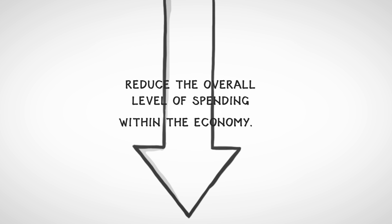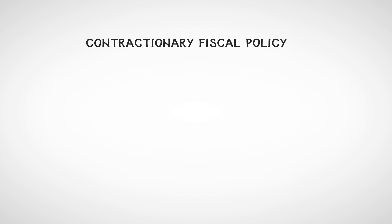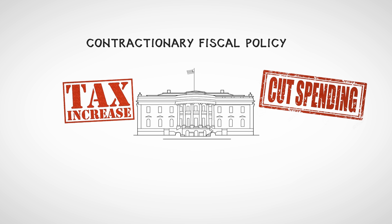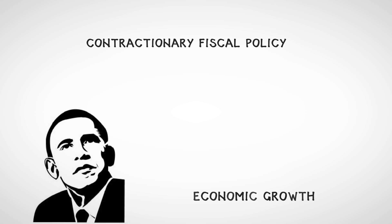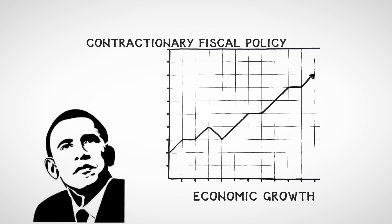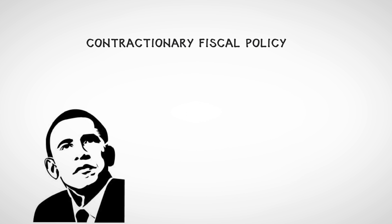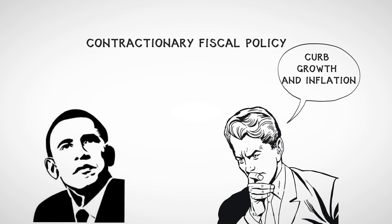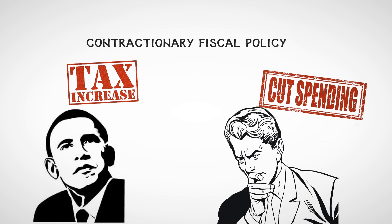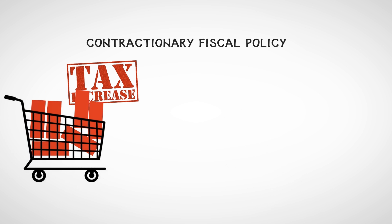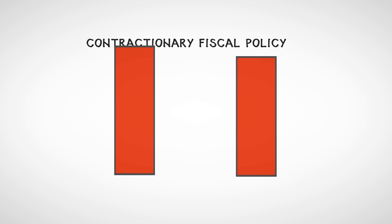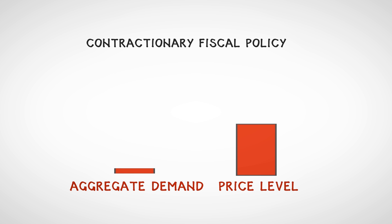Another way to reduce aggregate demand is to use contractionary fiscal policy — simply put, when the government decides to cut spending or increase taxes. For example, imagine Barack Obama reviews his morning statistics and realizes the economy is growing too quickly. After meeting with his advisors, he looks to develop a policy to curb growth and inflation. His economic advisors may suggest ways to cut government spending or raise taxes. Raising taxes can lead to reduced consumer spending as individuals have lower disposable income. These actions should reduce aggregate demand and decrease the price level.